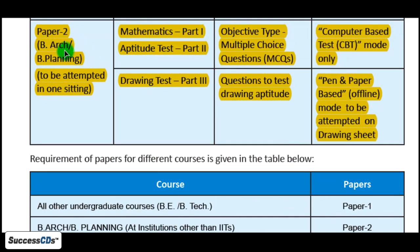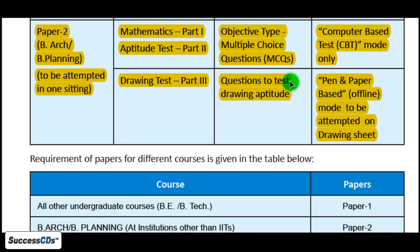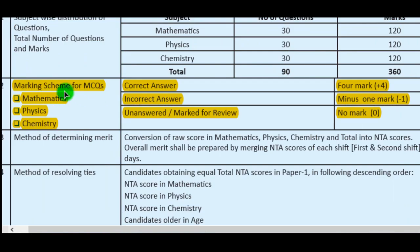Paper 2 is for students applying for B.Arch and B.Planning degrees. Mathematics (part 1) and aptitude test (part 2) will be objective type multiple choice questions in computer-based test mode only. The drawing test (part 3) will be in pen and paper-based offline mode.